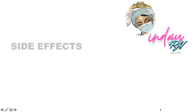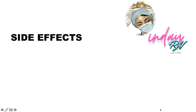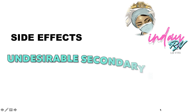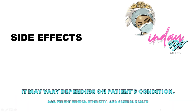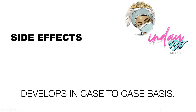First, let's discuss what a side effect is. This is actually the undesirable secondary effect which occurs in addition to the desired effect. It may vary for each individual depending on the person's disease state, age, weight, gender, ethnicity, and general health. So side effects develop on a case-to-case basis.